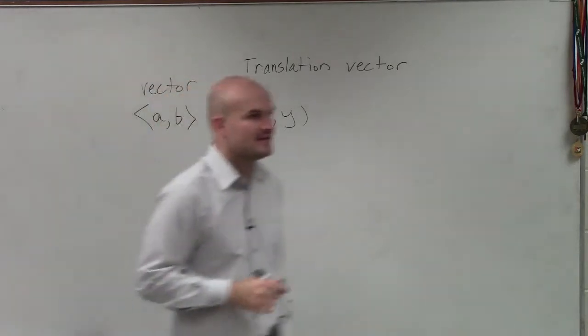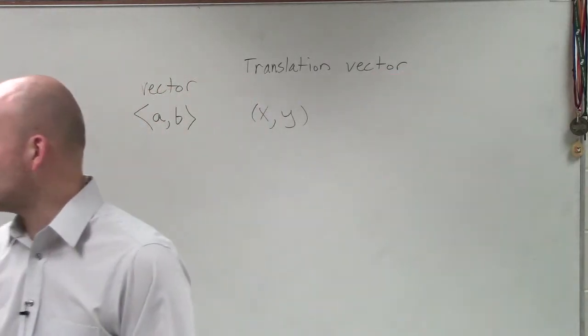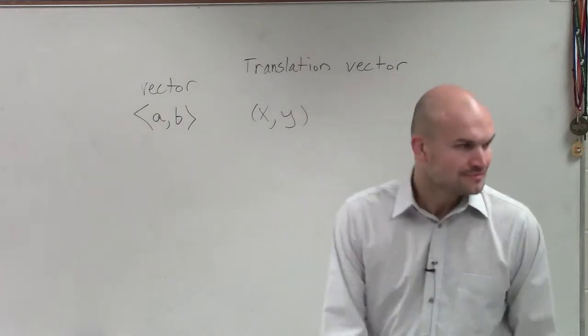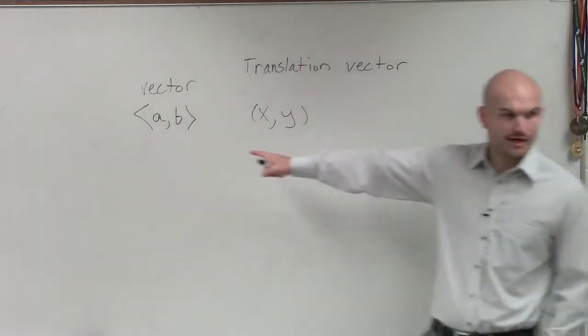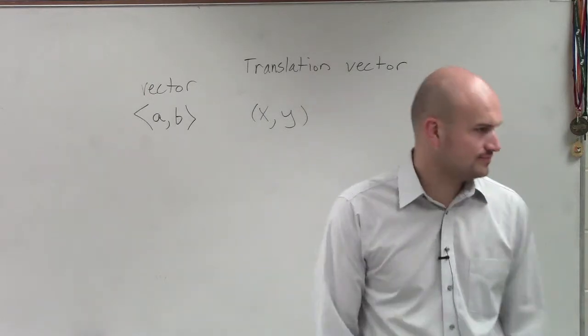Rather than having nice little parentheses, like a nice little rounded parentheses, it's going to have a little bit more jagged pointed parentheses that we're going to look at. So what is this transformation vector then going to do?